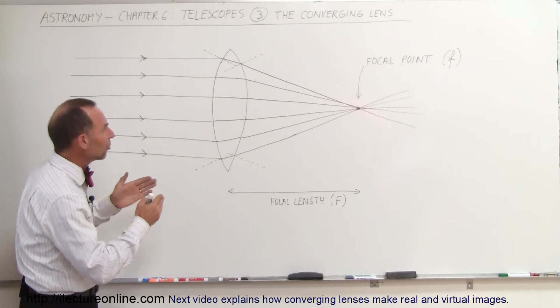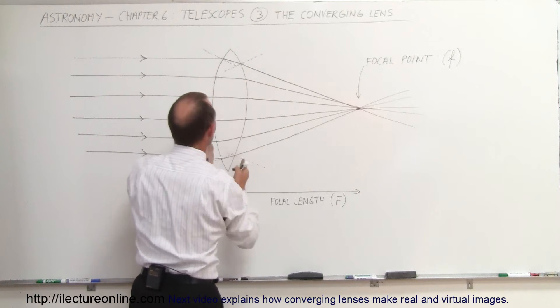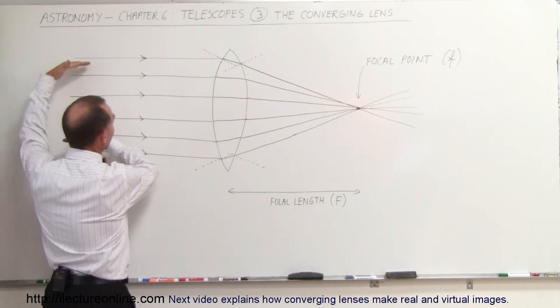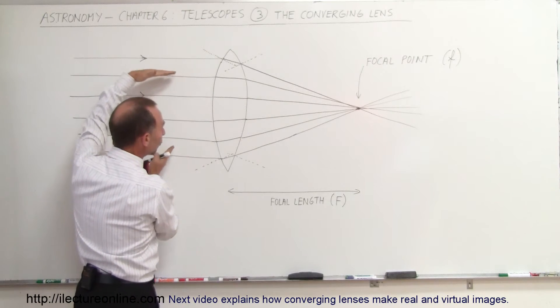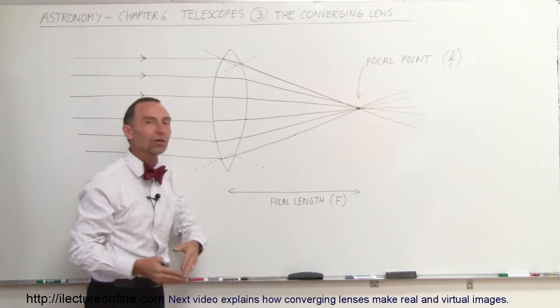When we look at the lens, you can see that the lens is shaped in a particular way. This is called a converging lens because after rays go through a lens like this, when they come in parallel to one another and go through the lens, they will converge to a single point. That's why they call this a converging lens.